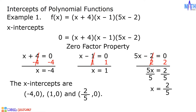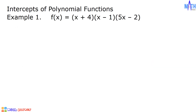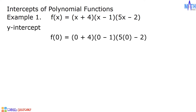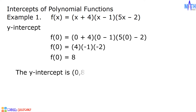The x-intercepts are negative 4, 0 and 1, 0 and 2 over 5, 0. Next, let us find the y-intercept. Set x equals 0. f of 0 equals quantity 0 plus 4 times quantity 0 minus 1 times quantity 5 times 0 minus 2. Solving: 0 plus 4 is 4, 0 minus 1 is negative 1, and 5 times 0 minus 2 is negative 2. f of 0 equals 4 times negative 1 times negative 2 is equal to positive 8. The y-intercept is 0, 8.